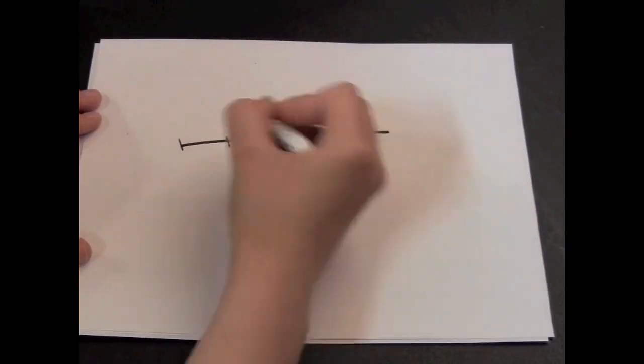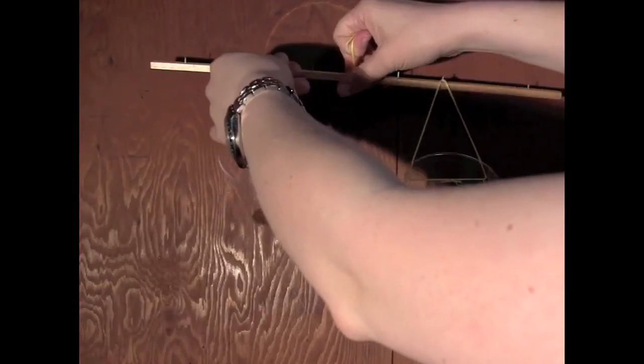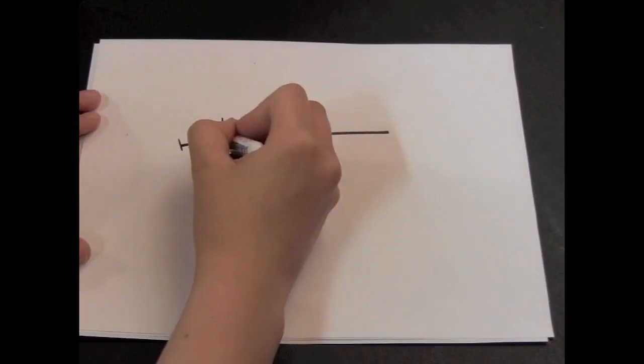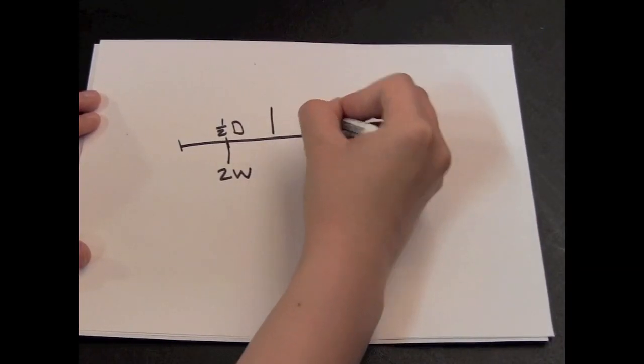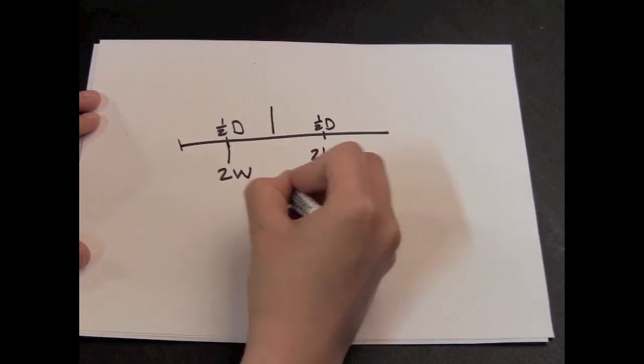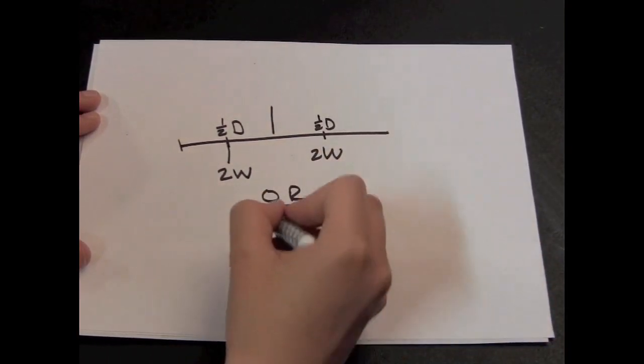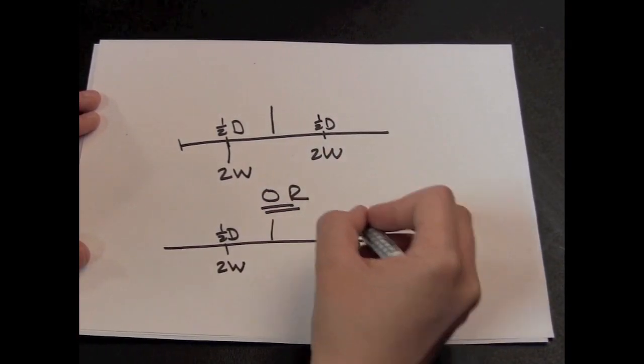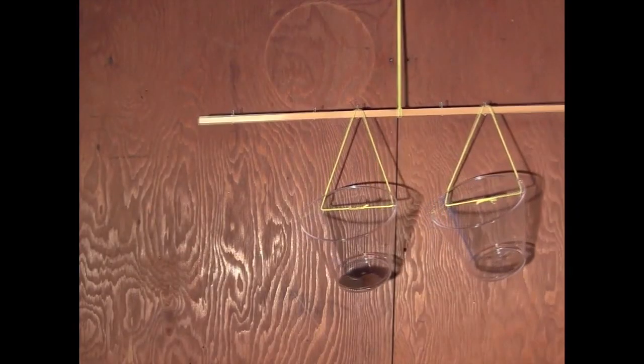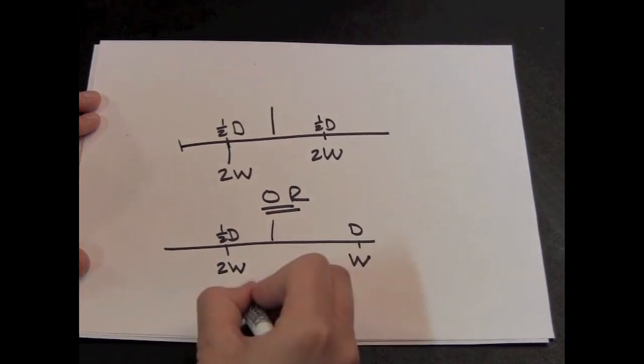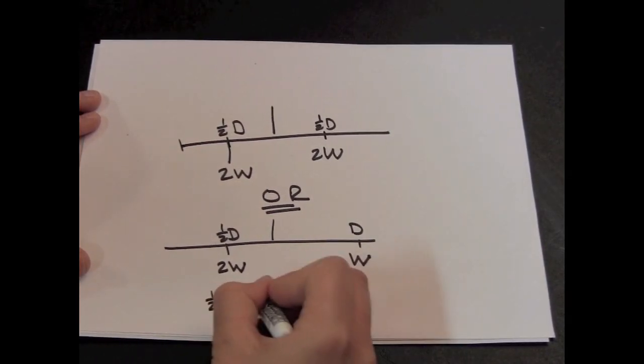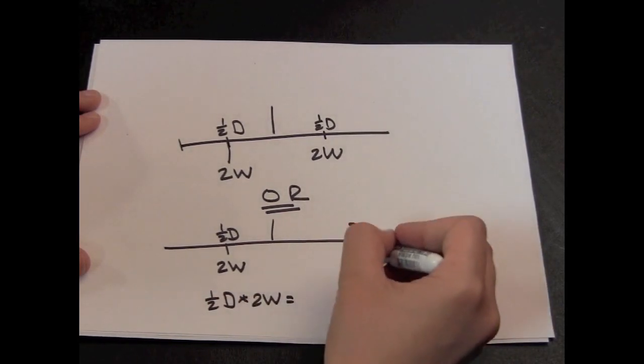But when I moved the distance to ½D and kept the weight at 2W, five coins plus a cup, there were two ways that I could balance it. I could either move the other cup closer to ½D, or I could keep the other cup at D and just empty it of the five coins, so now its weight is only W. This leaves the counterclockwise torque, ½D times 2W, equal to the clockwise torque, D times W.